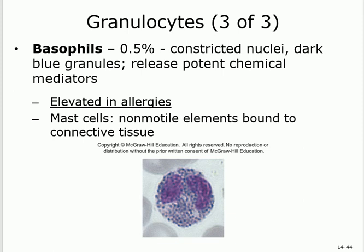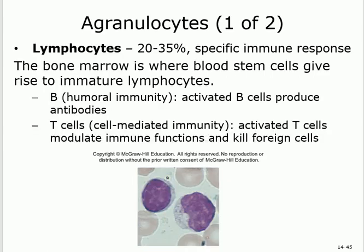Basophils indicate inflammation and allergy; mast cells indicate inflammation and allergy — there is overlap. This is called the differential count: if white blood cells are elevated, we specify which type is increasing to identify the cause — neutrophils for bacterial infection, eosinophils for parasites or allergy, mast cells or basophils for inflammation or allergy.